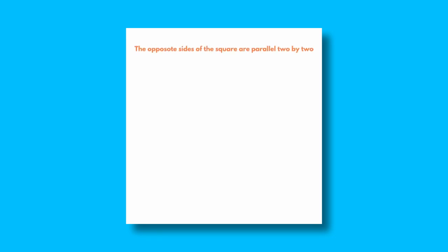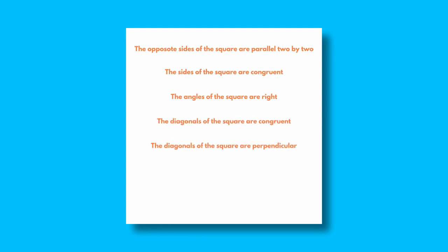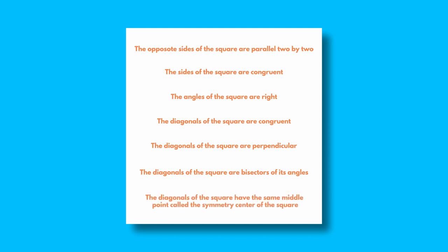The opposite sides of the square are parallel two by two. The sides of the square are congruent. The angles of the square are right. The diagonals of the square are congruent. The diagonals of the square are perpendicular. The diagonals of the square are bisectors of its angles. The diagonals of the square have the same midpoint, called the symmetry center of the square.